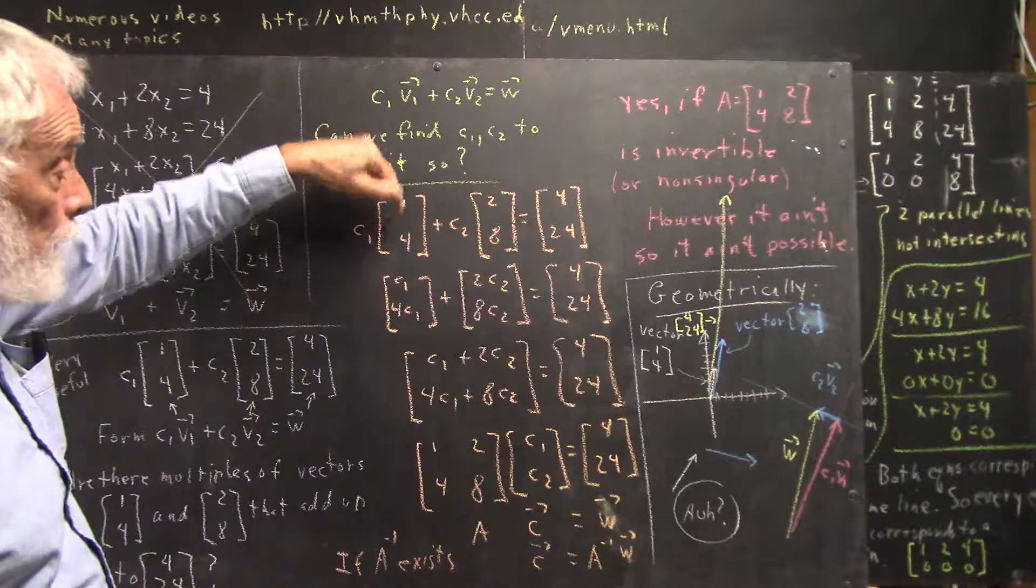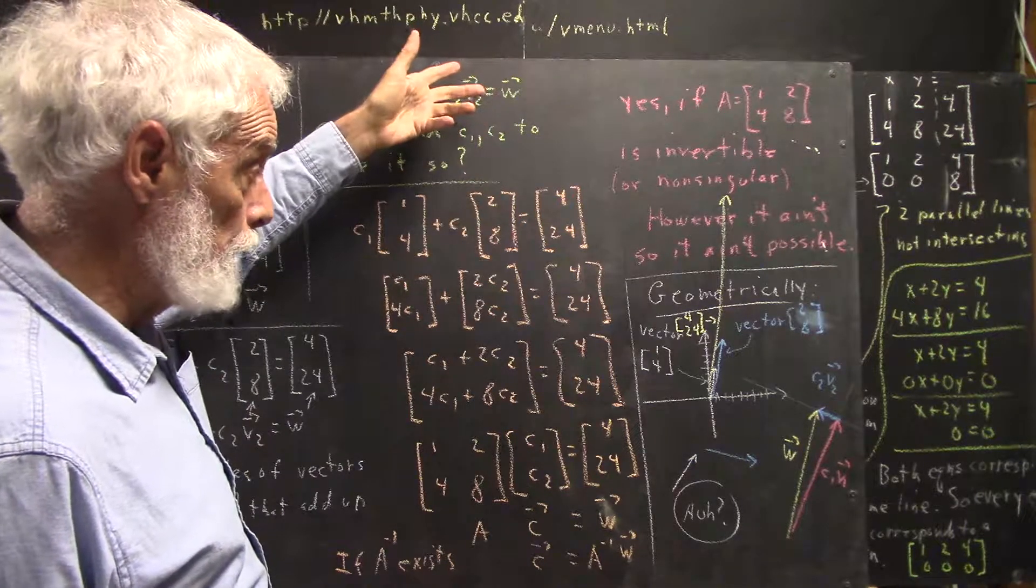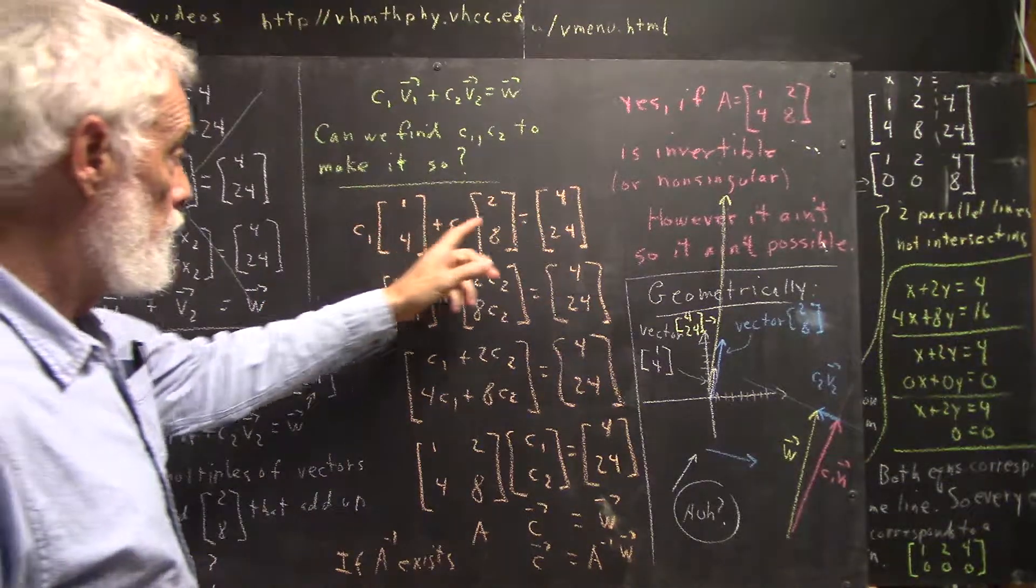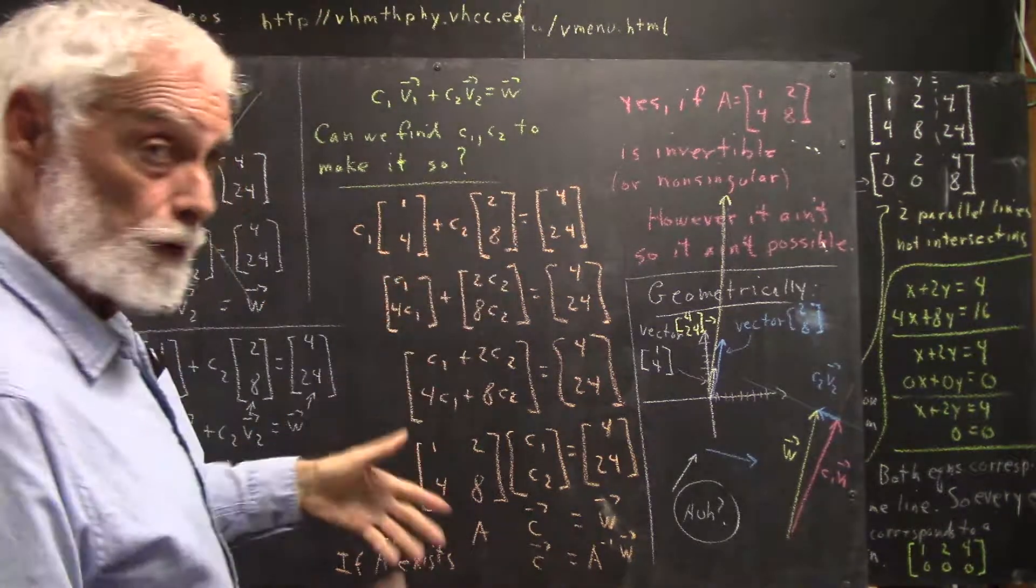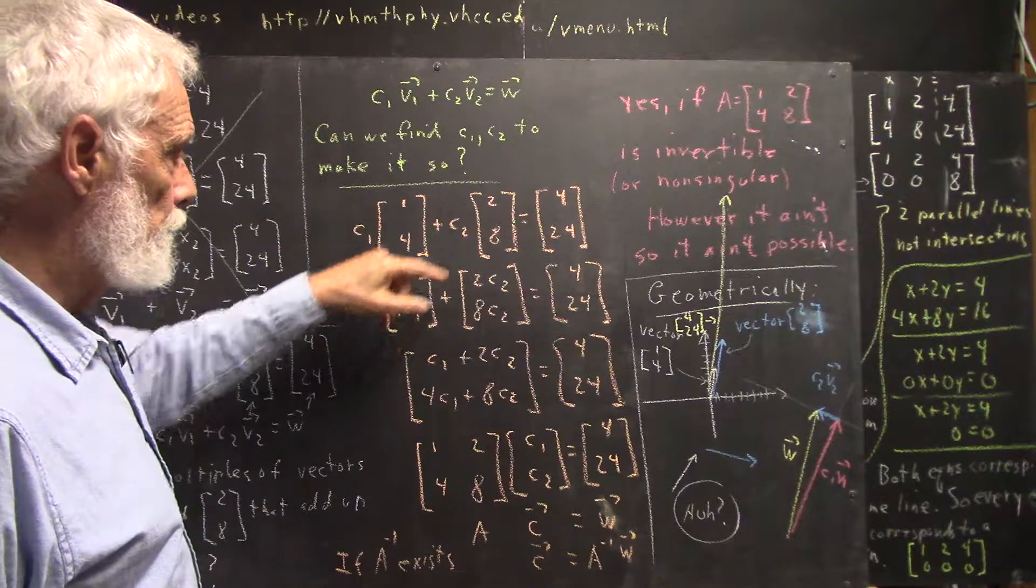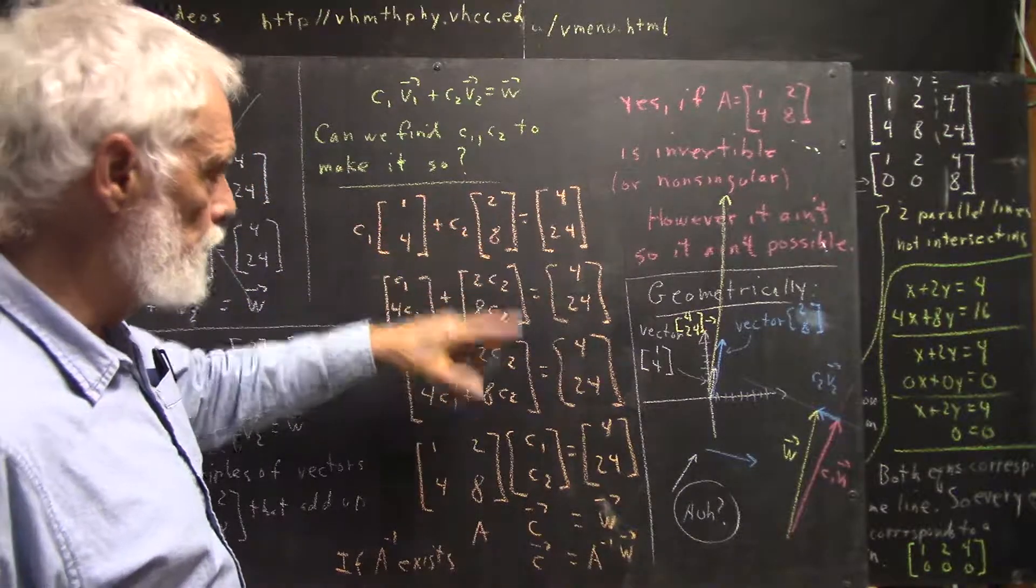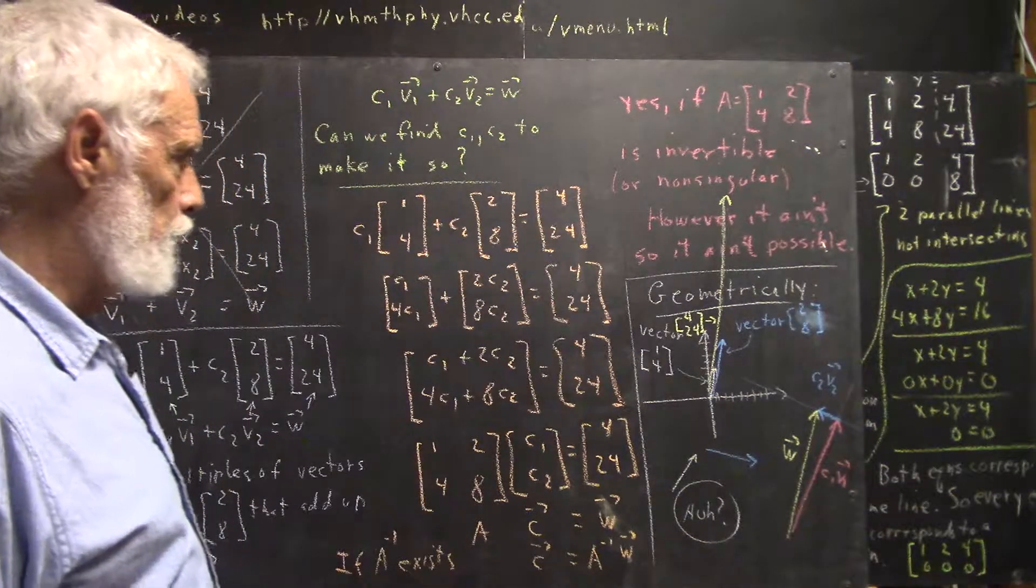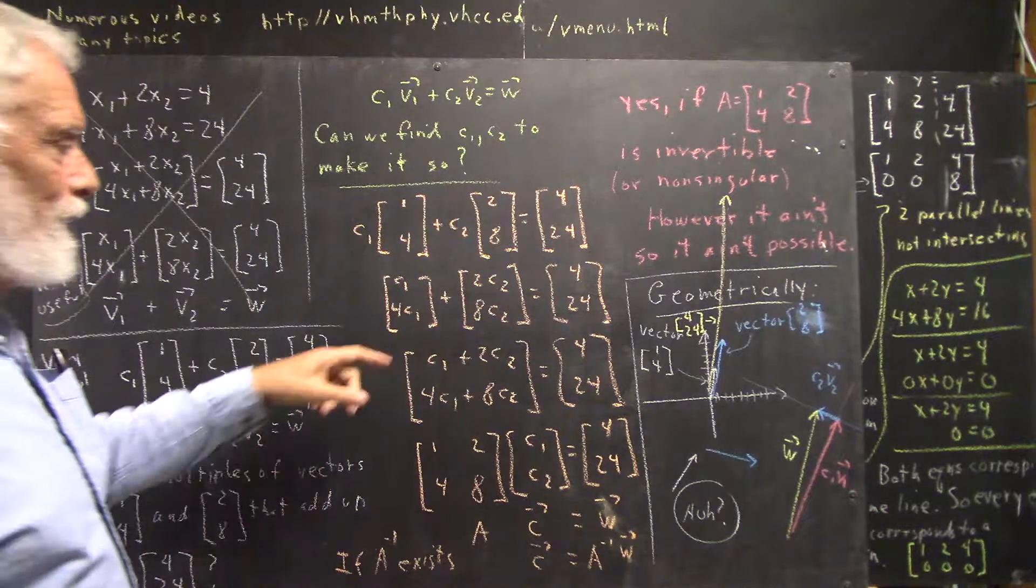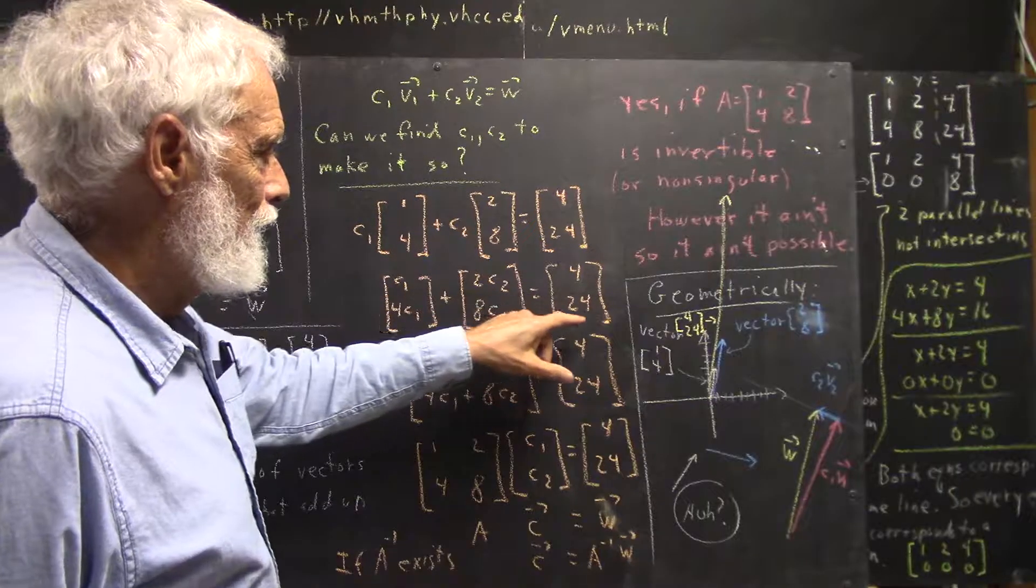Let's see what this means. c1*v1 would then be c1 times the [1,4] vector. c2*v2 would be c2 times the [2,8] vector, and w is the [4,24] vector. If we multiply through by the constant using rules we know for matrix multiplication, we get [c1, 4c1] plus [2c2, 8c2] equals [4, 24].